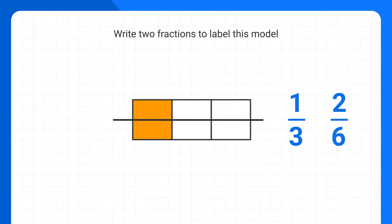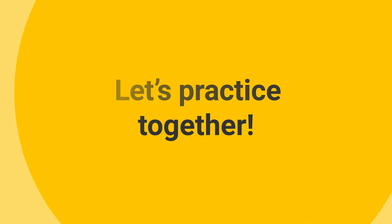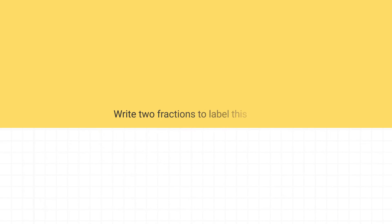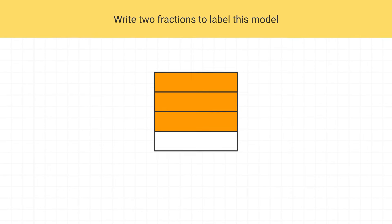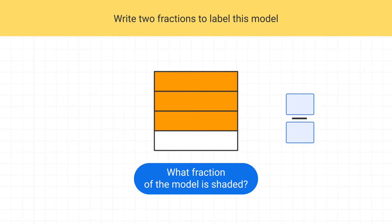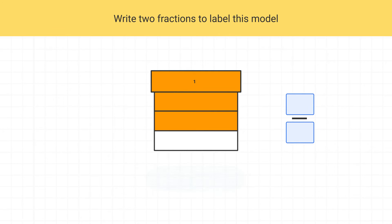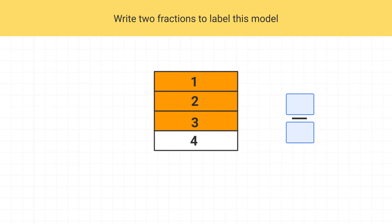Now that you understand how to do this, let's practice together. Let's write two fractions to label this model. Well, the first fraction can just be the fraction we see when we look at the model right now. What fraction of the model is shaded? Well, three pieces are shaded out of a total of four, so this is three-fourths.